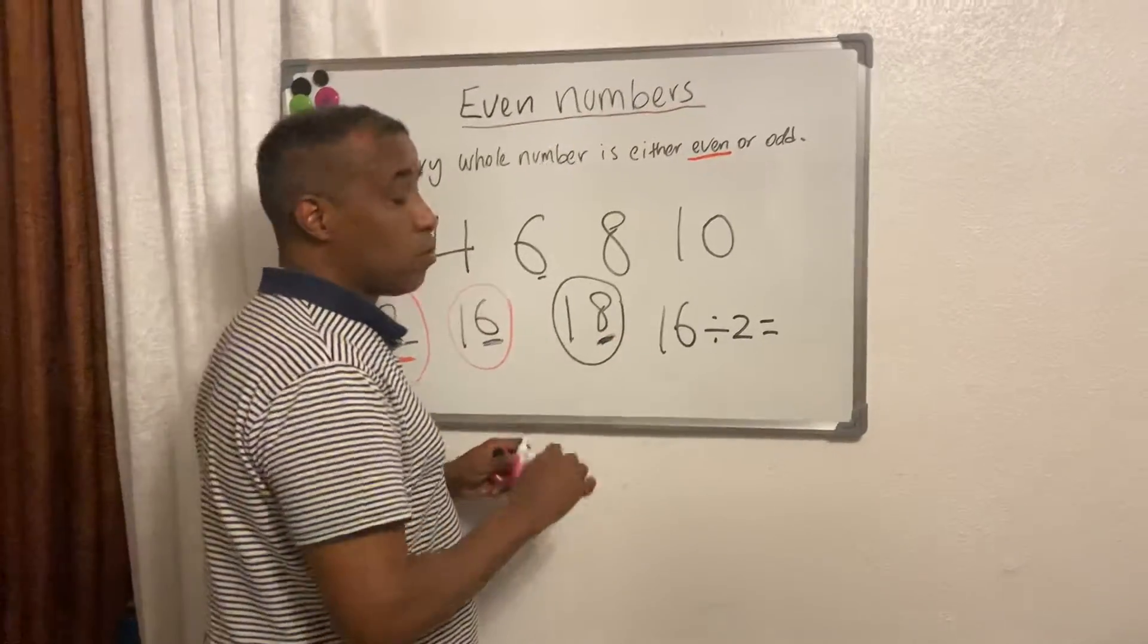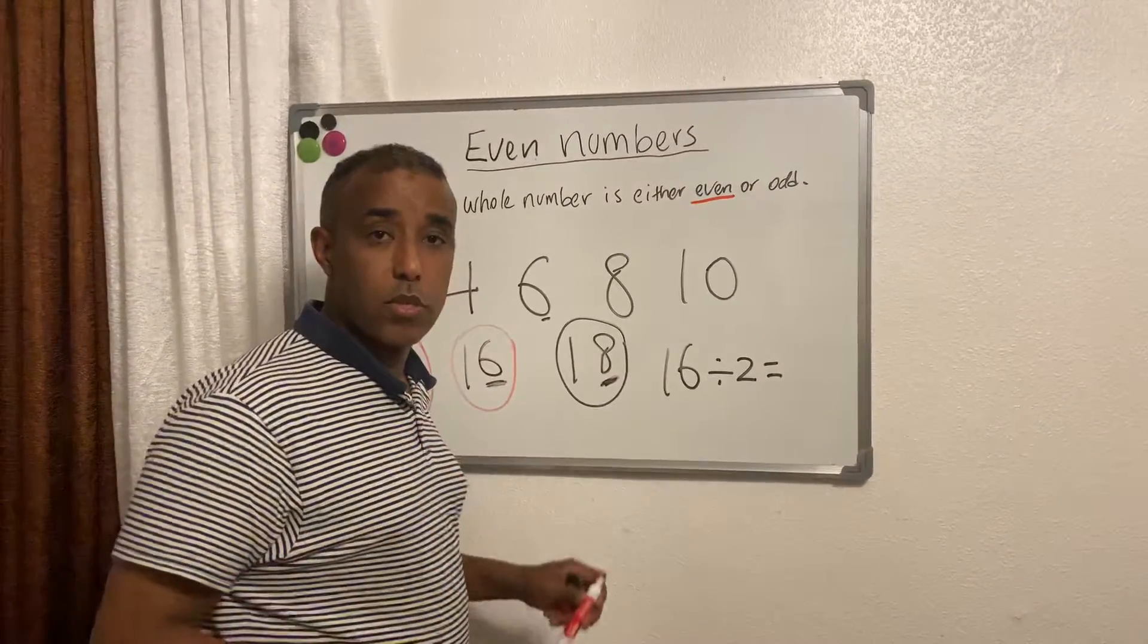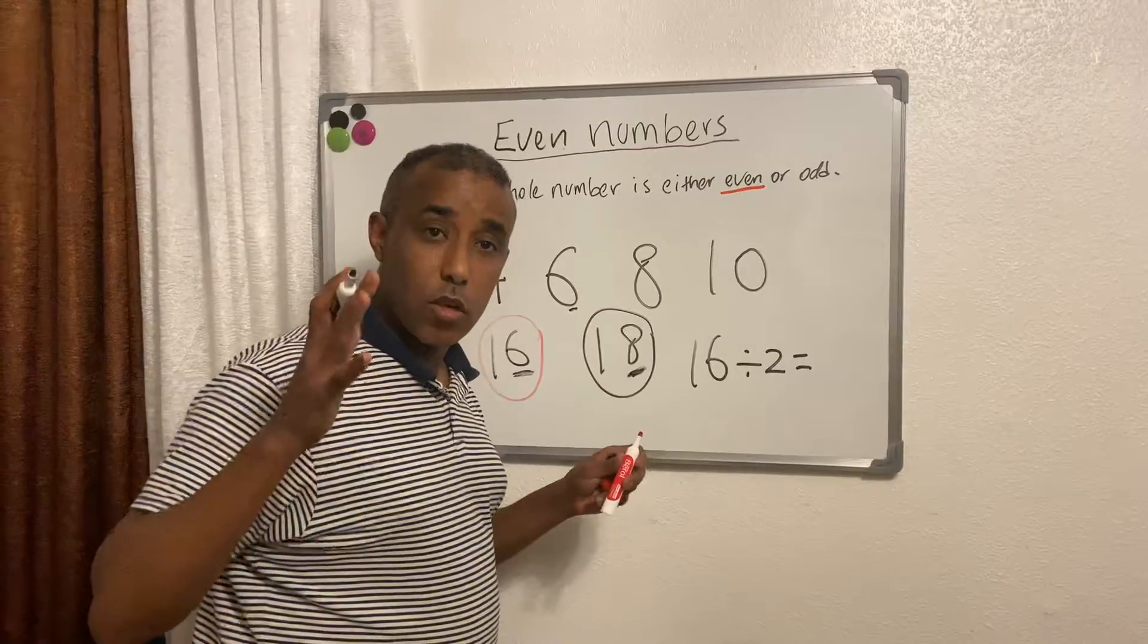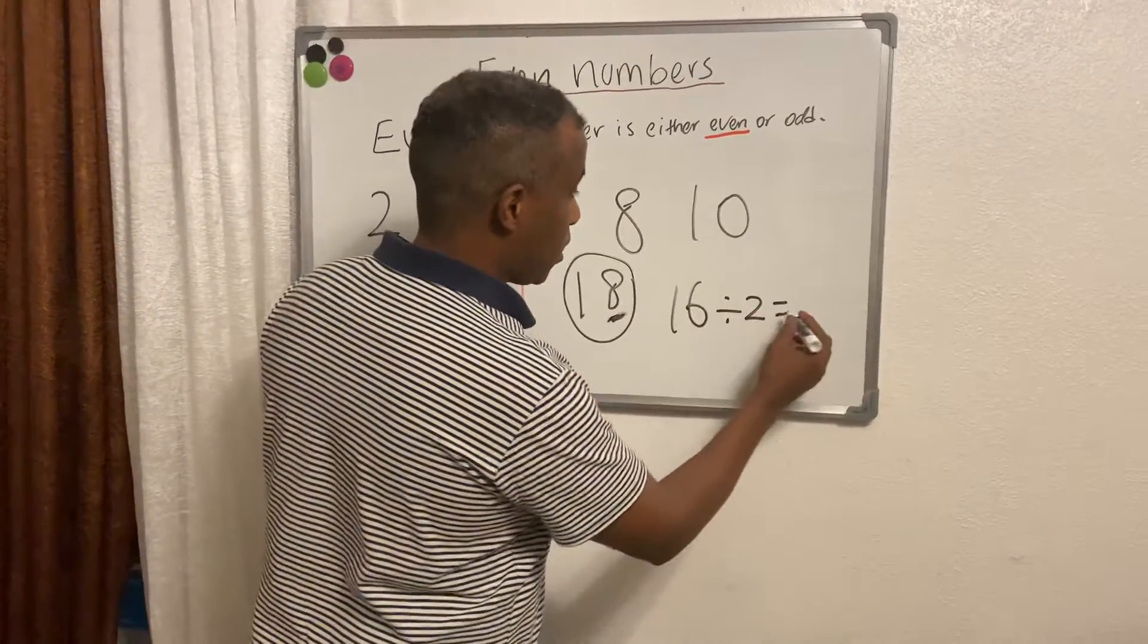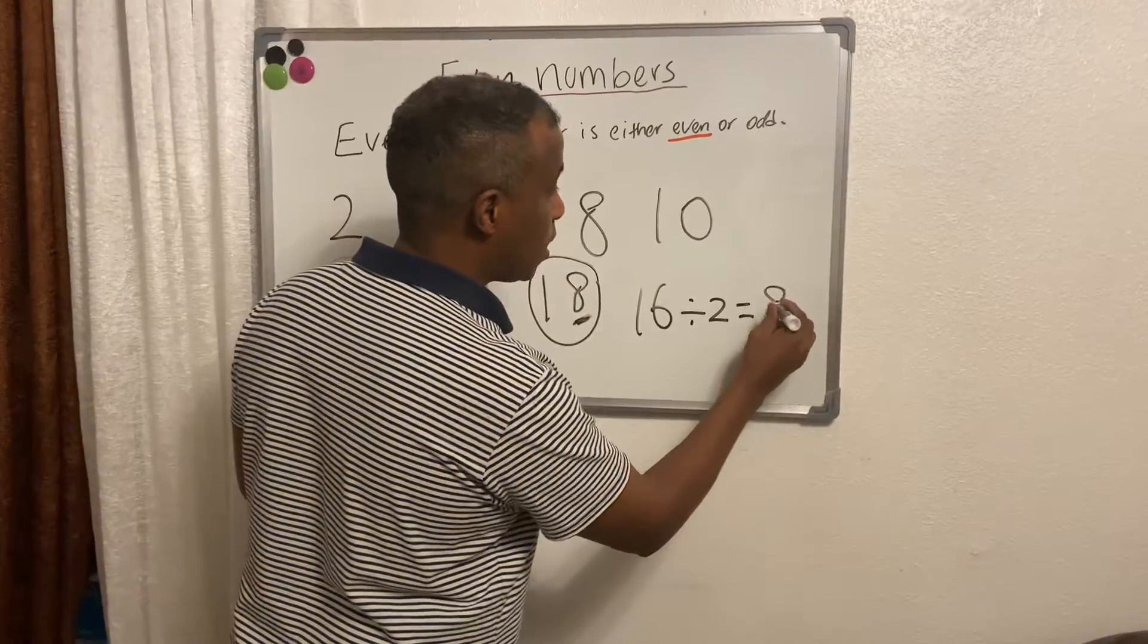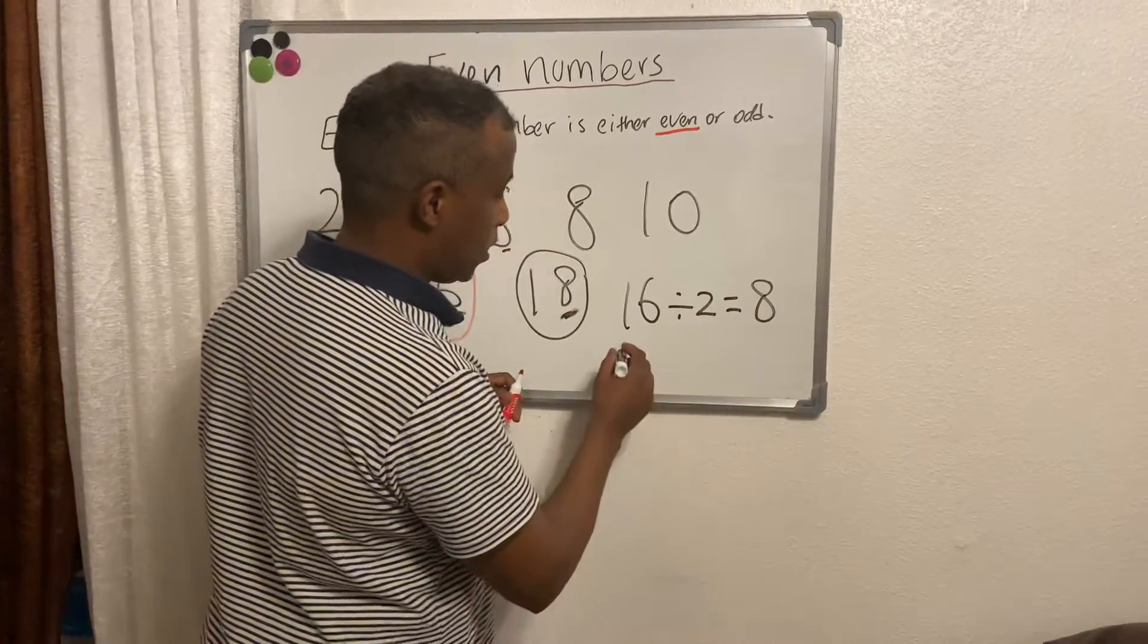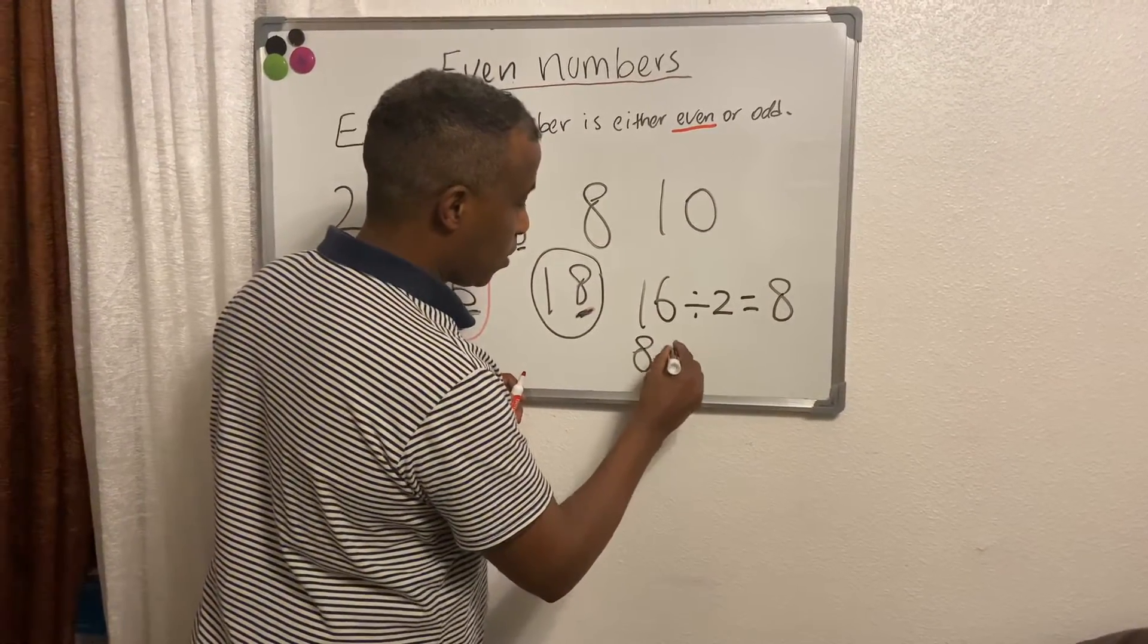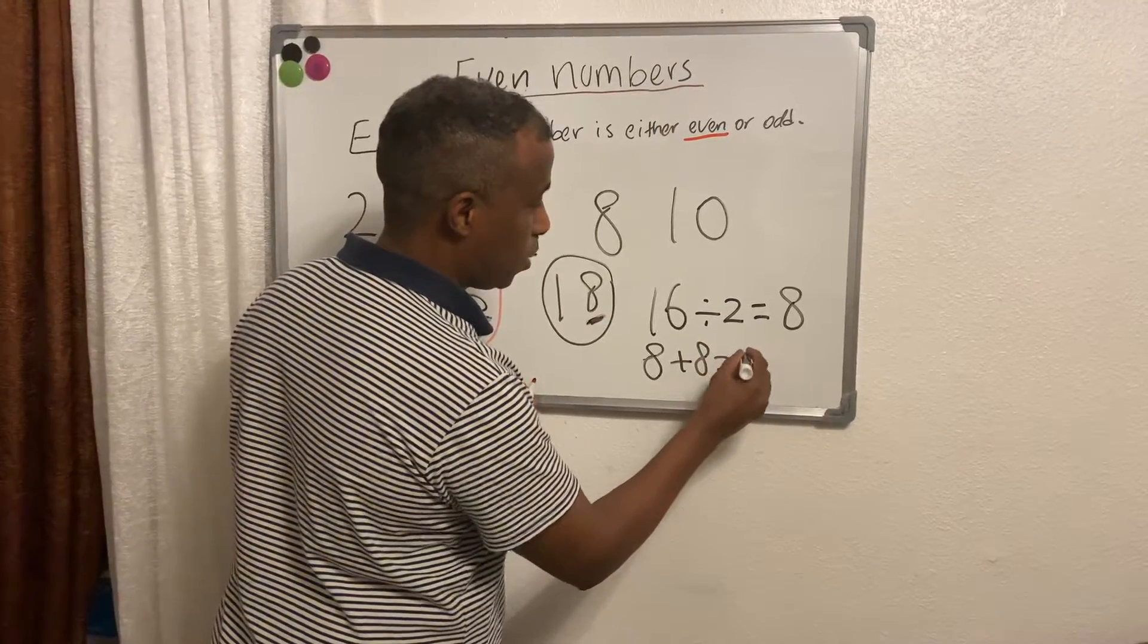Whoever has a remainder it's odd, not even. The answer is 8. 8 plus 8 is 16. 8 plus 8 equals 16. That shows you these numbers are even numbers.